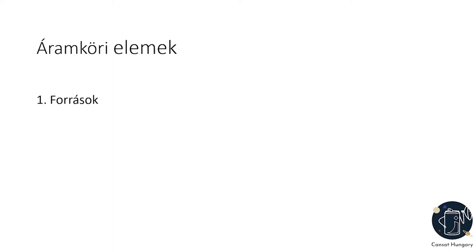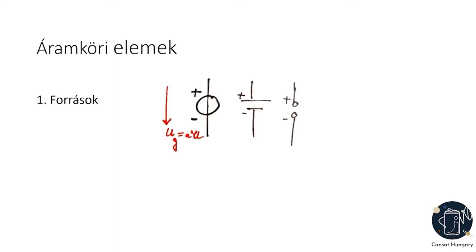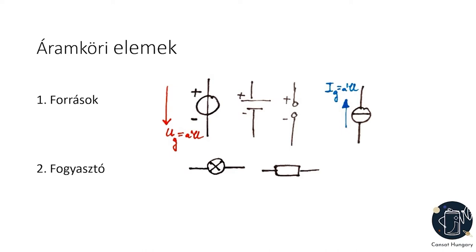Most már van áramunk és feszültségünk, építsünk áramkört. Az áramköri elemek lehetnek aktívak vagy passzívak. Az aktív elemek a források. A feszültségforrás mindig állandó U_G generátorfeszültséget kényszerít az áramkör két kapcsára. Az áramforrás pedig állandó I_G áramot injektál a hálózatba. Ezt úgyis mondjuk, hogy az áramkör feszültség- vagy áramkényszeres. A passzív elemek a fogyasztók, azaz terhelő ellenállások. Az aktív és passzív elemeket vezetékkel kötjük össze.